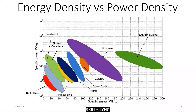The next topic is energy versus power density. This matters because, for example, high-power tools like drilling tools don't require a lot of energy density since you're only drilling five or six holes at a time, but they require a lot of power density because you need to provide a lot of current to the motor to drill through concrete or metal. The same comparison of battery types applies here.